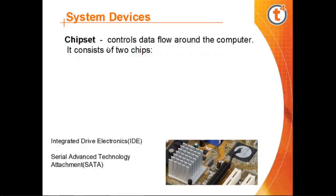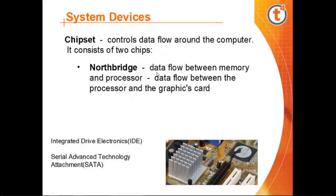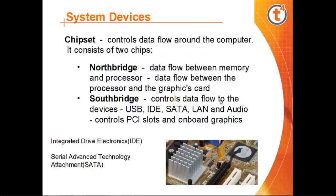The chipset controls data flow around the computer. It is divided into two parts: the north bridge and the south bridge. The north bridge controls data flow between the memory and the processor, and between the processor and the graphics card. The south bridge controls data flow to devices such as USB, IDE, SATA, LAN, and audio.